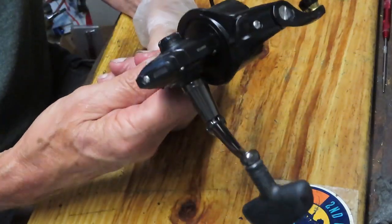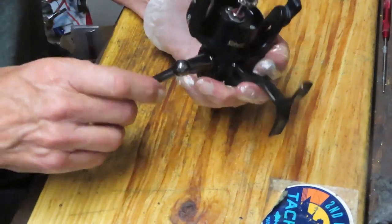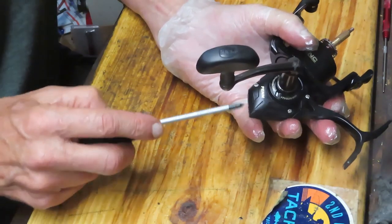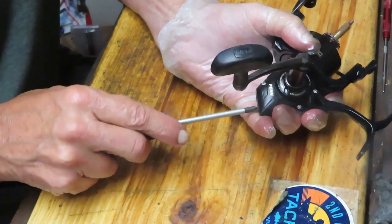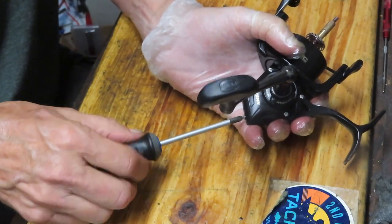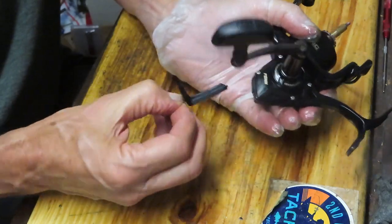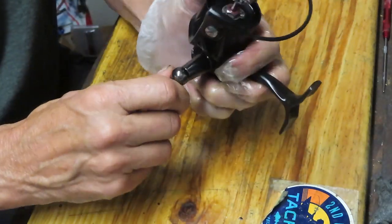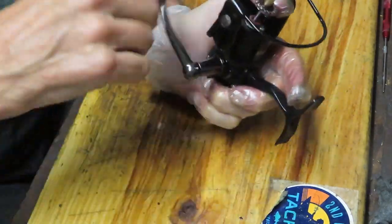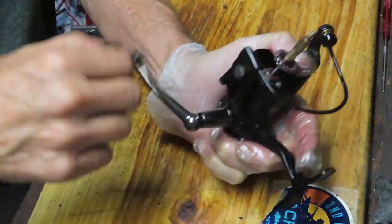One of the things you don't have in this is an anti-reverse override. That always bothers me, but it doesn't bother everybody. I guess the manufacturers have thought that folks don't hand fight fish any longer. They leave it to their drag systems and they don't need the anti-reverse override. I'm going to take the bump guard off, and now I'm going to take the handle off. The handle comes off in a clockwise manner, opposite the way that the reel turns.